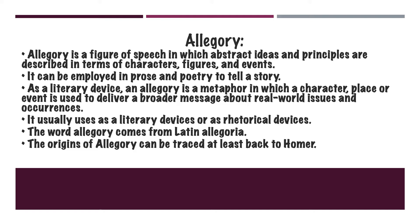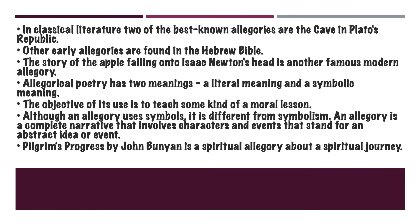The origins of allegory can be traced back at least to Homer. In classical literature, two of the best-known allegories are the cave in Plato's Republic. Other early allegories are found in the Hebrew Bible. The story of the apple falling onto Isaac Newton's head is another famous modern allegory. Allegorical poetry has two meanings: a literal meaning and a symbolic meaning.